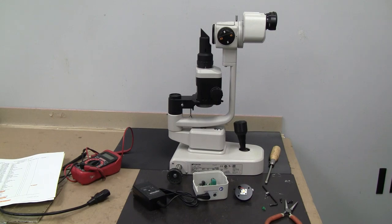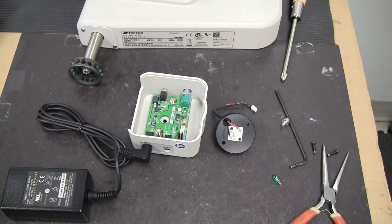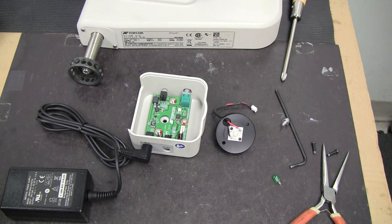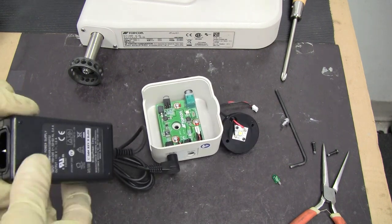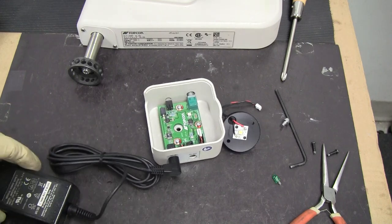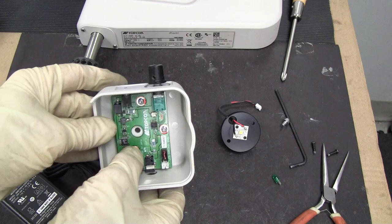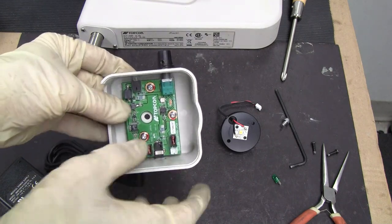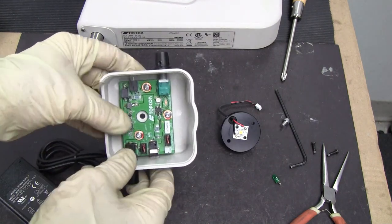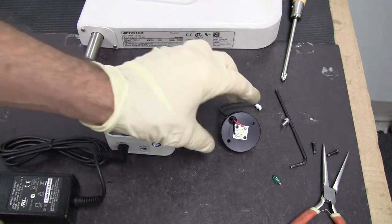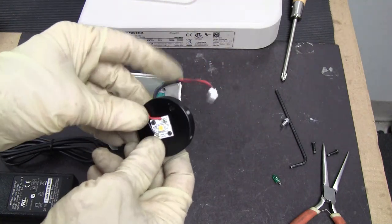This is a Topcon SL2G slit lamp. The main electrical components are the power supply, the LED control PCB, and the LED unit.